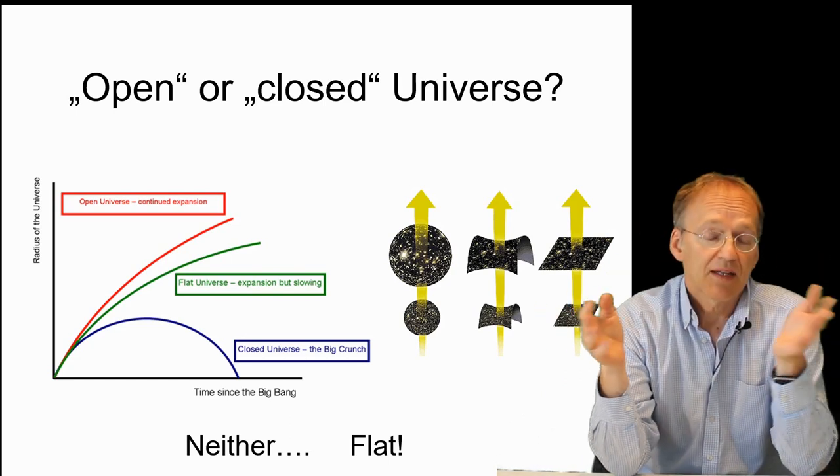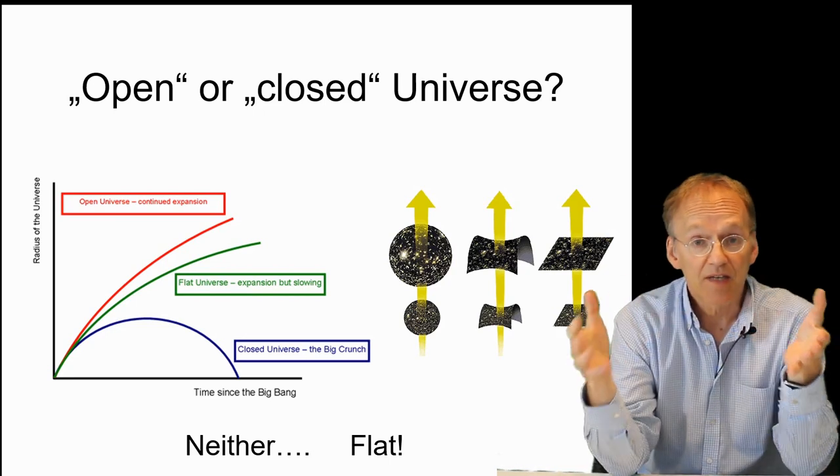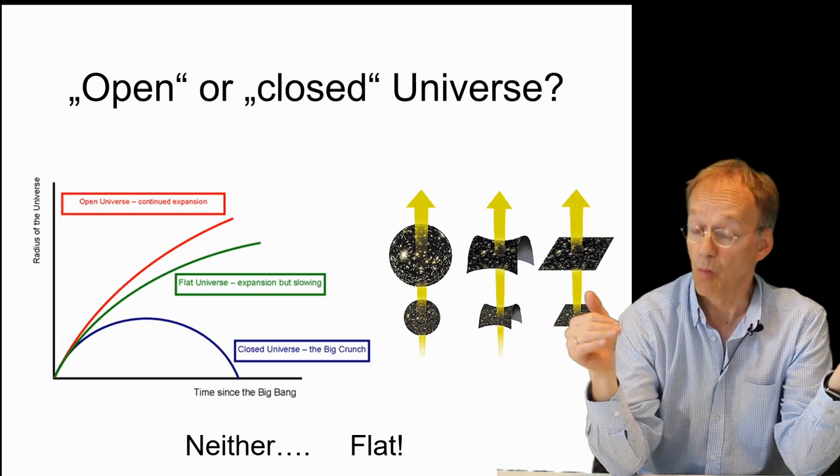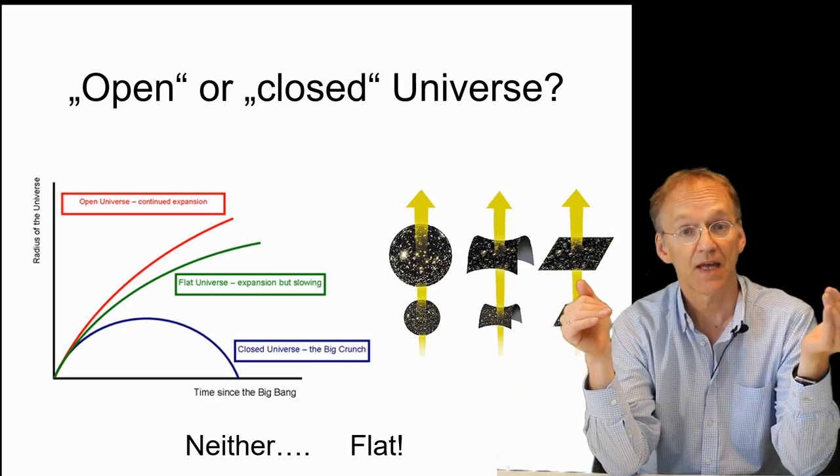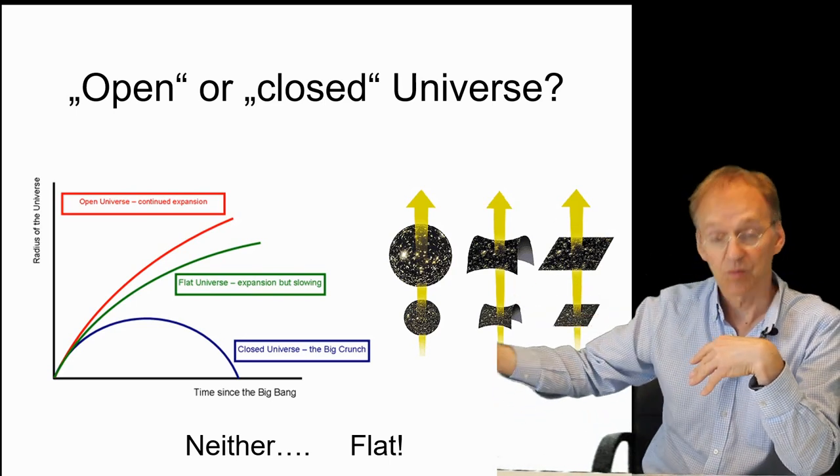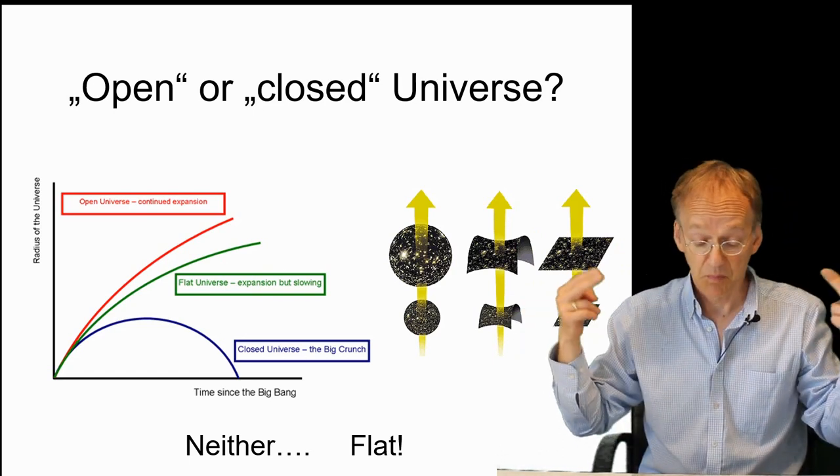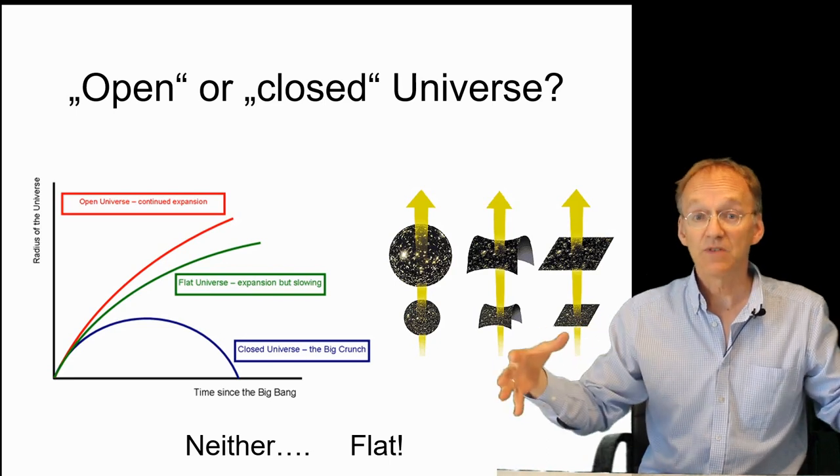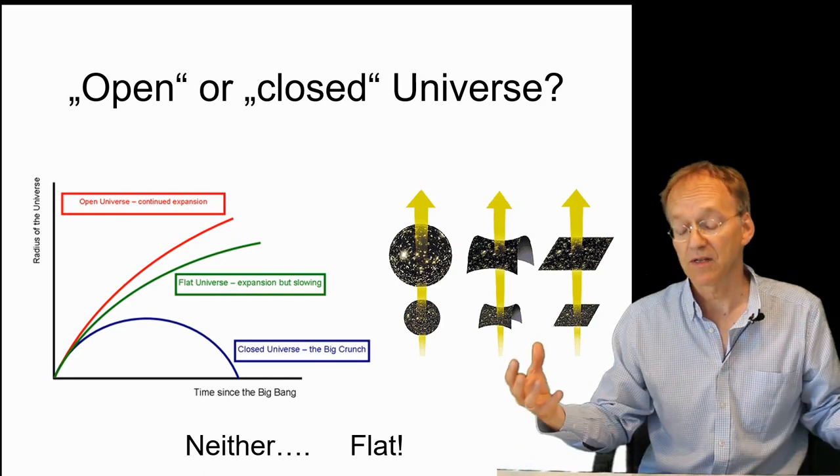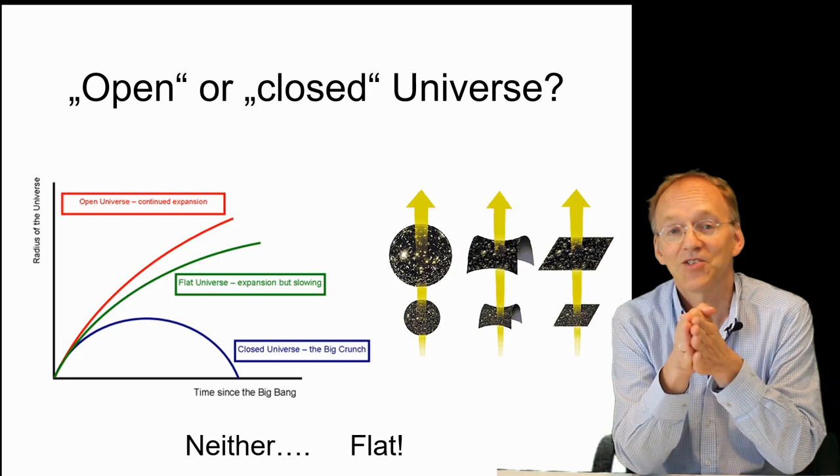Because once you assume that you have this expansion, it's a quite natural idea to say this expansion has to be slowed down by gravitational attraction. And then the question comes up, how much and why do we observe it at the observed rate? Will the universe expand forever, which would be an open universe, or will the supposed gravitational attraction slow down the expansion and eventually lead to a recontraction or big crunch, as people like to call it? Or is it just in between?